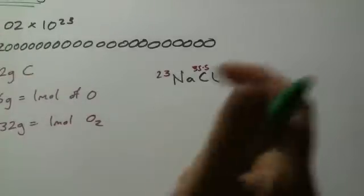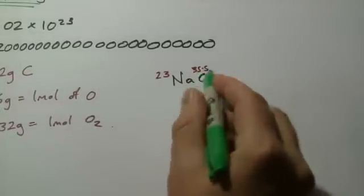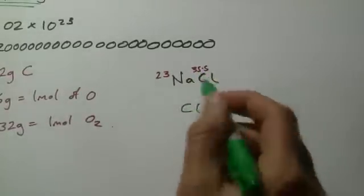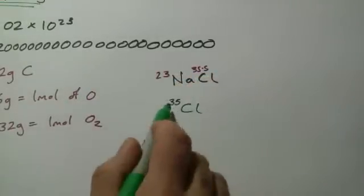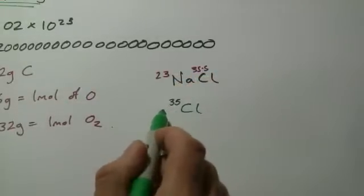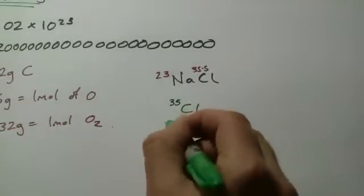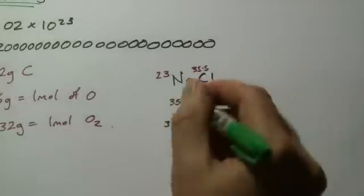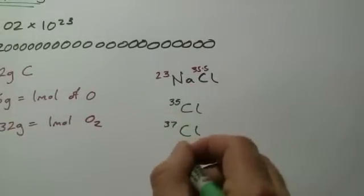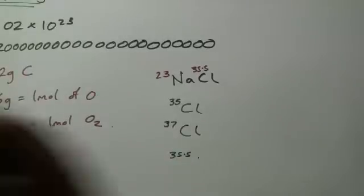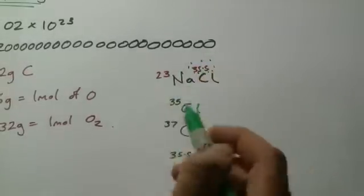Why 35.5? Why doesn't it have a whole number? Well, chlorine is made up of two different isotopes. An isotope just means it's got a different number of neutrons. Some chlorine atoms have a relative atomic mass of 35, but about a quarter have a relative atomic mass of 37. When we average these out, it turns out to be about 35.5. That's why it's not a whole number.